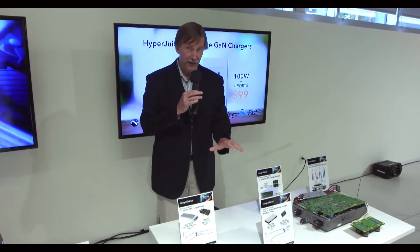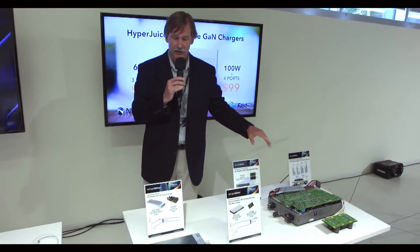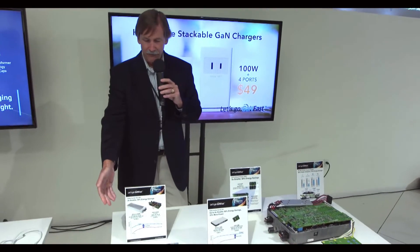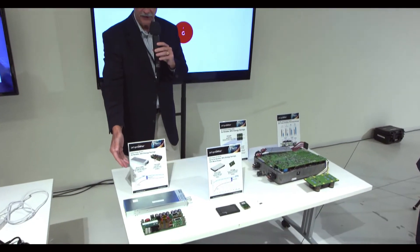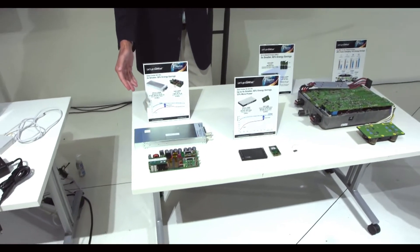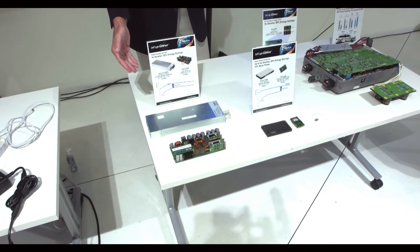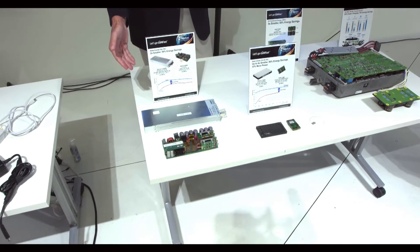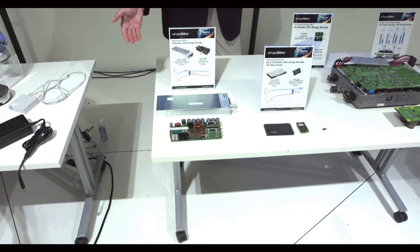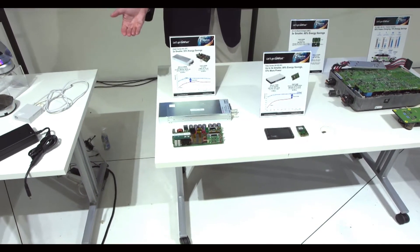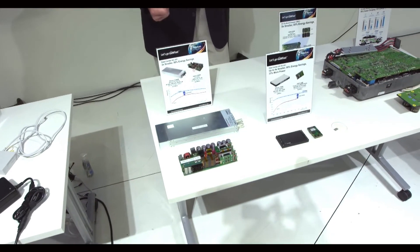We're going to talk about data centers and electric vehicle applications. Let's start with this example: a conventional 3.2 kilowatt power supply made with silicon, available in the market today. This is an AC to DC converter that takes 220 or 240 volts AC in and delivers 48 volts out.